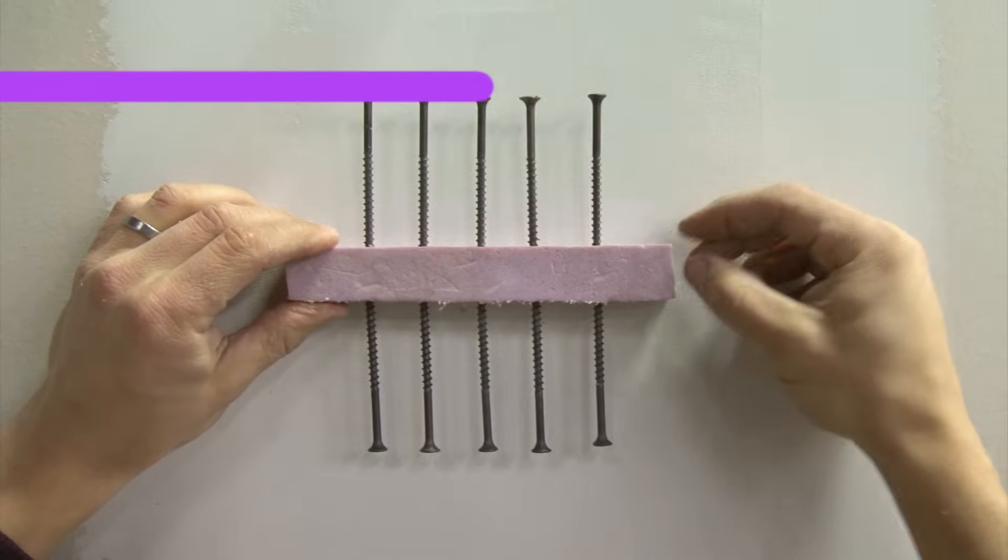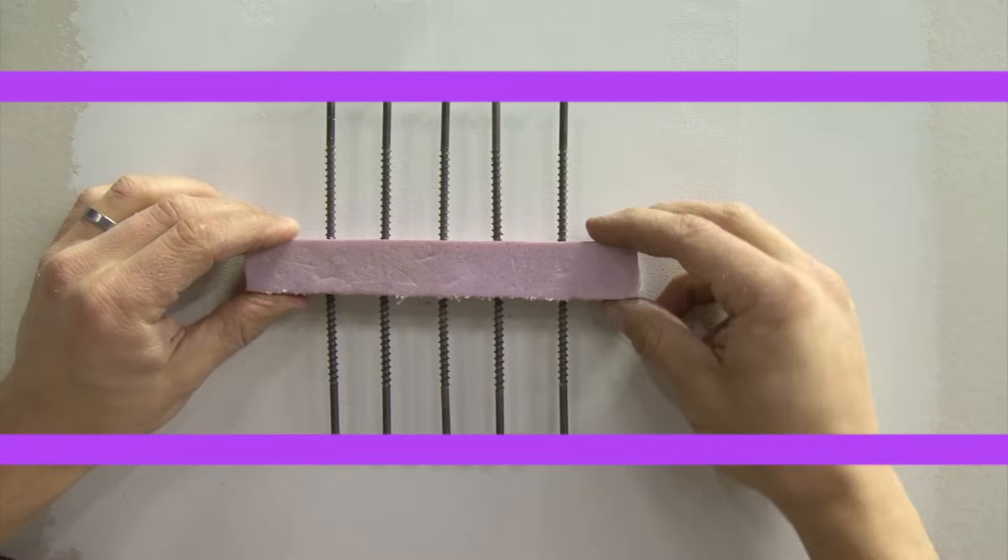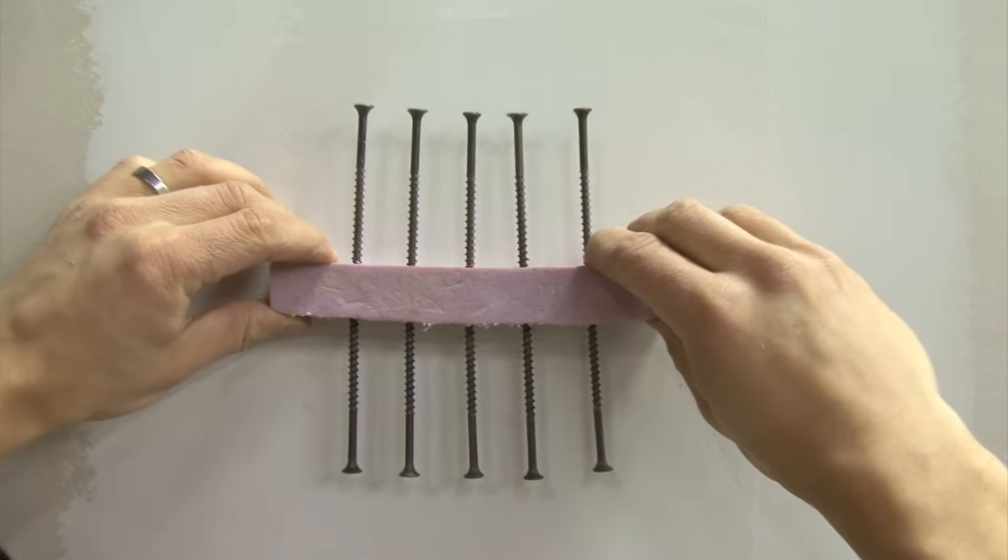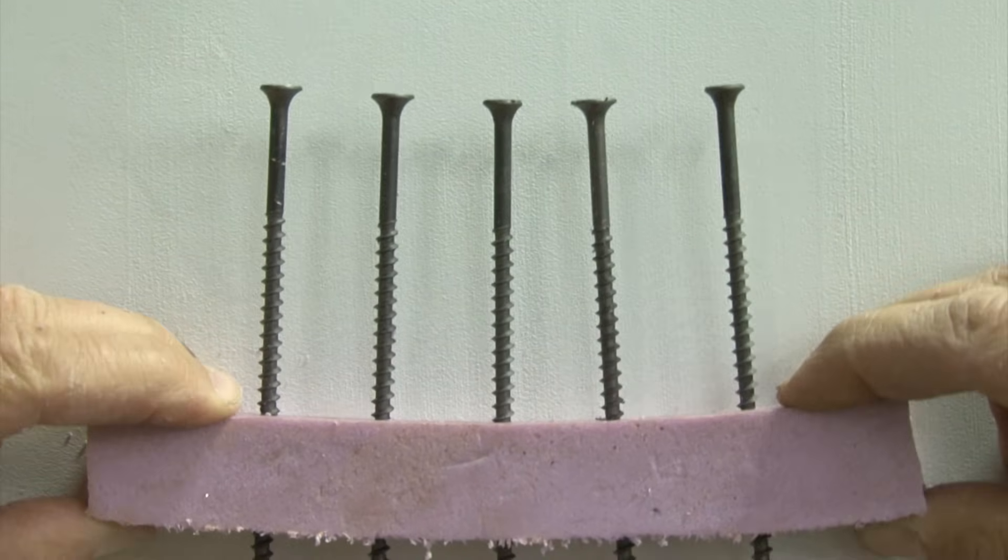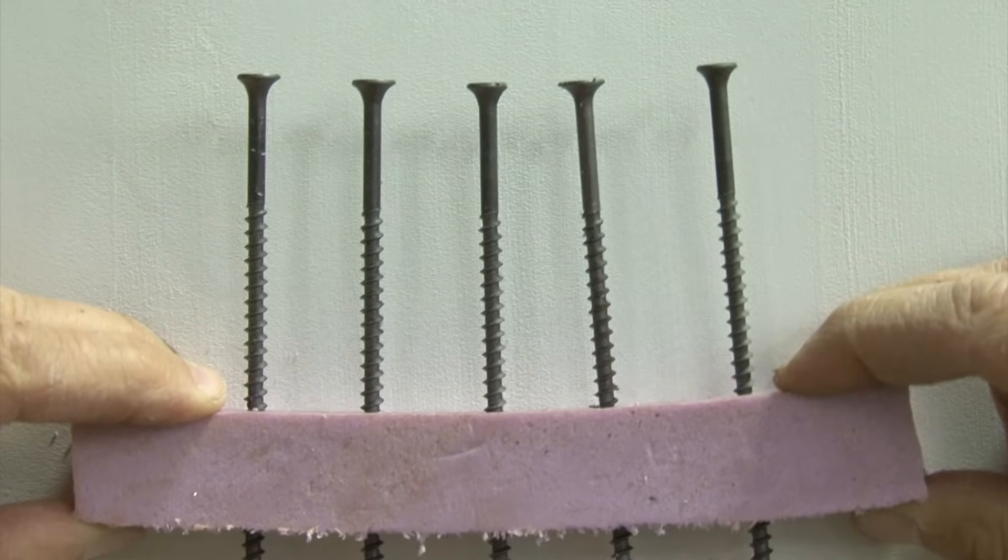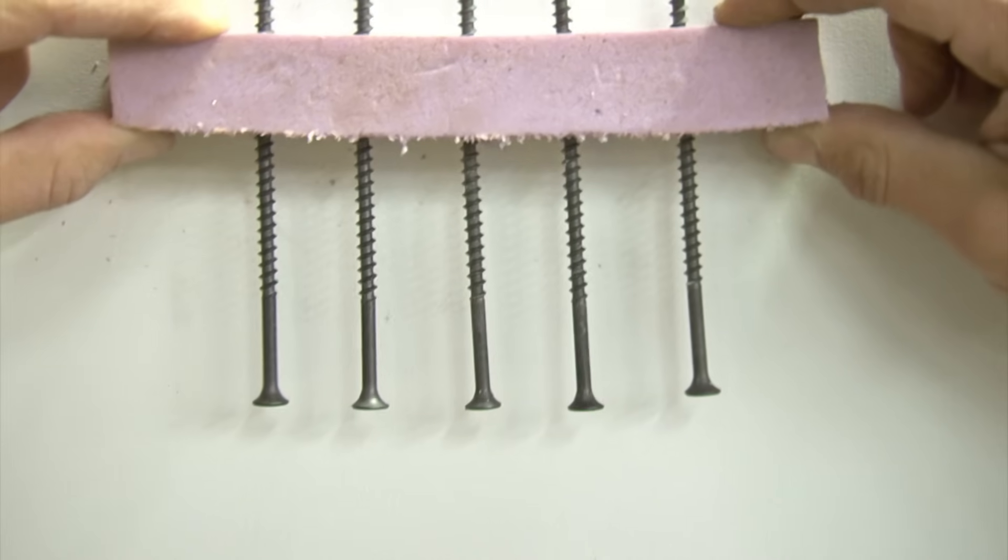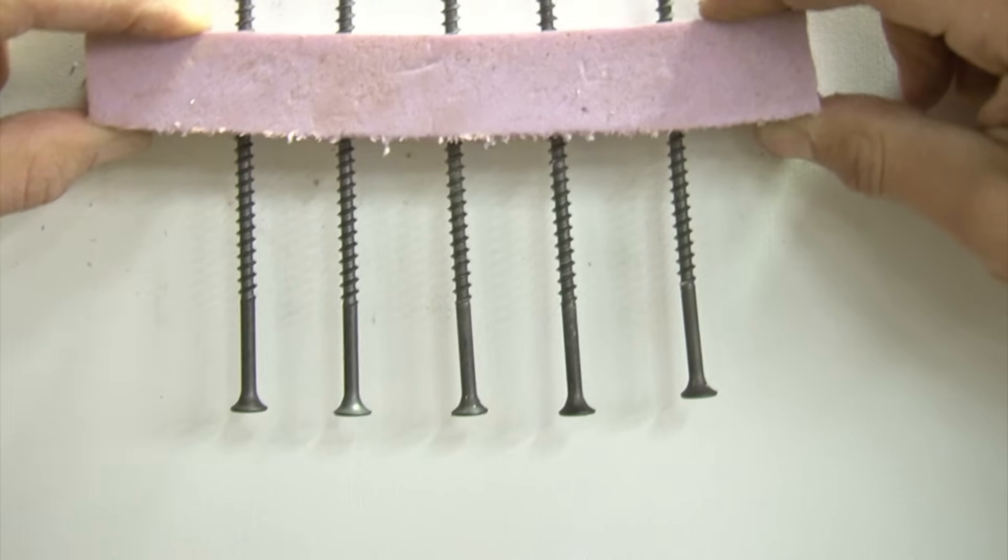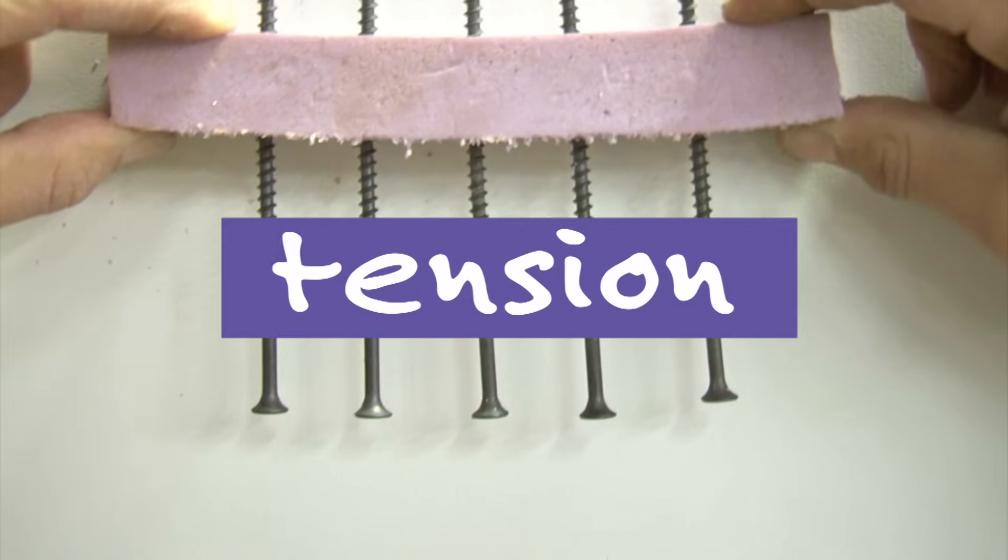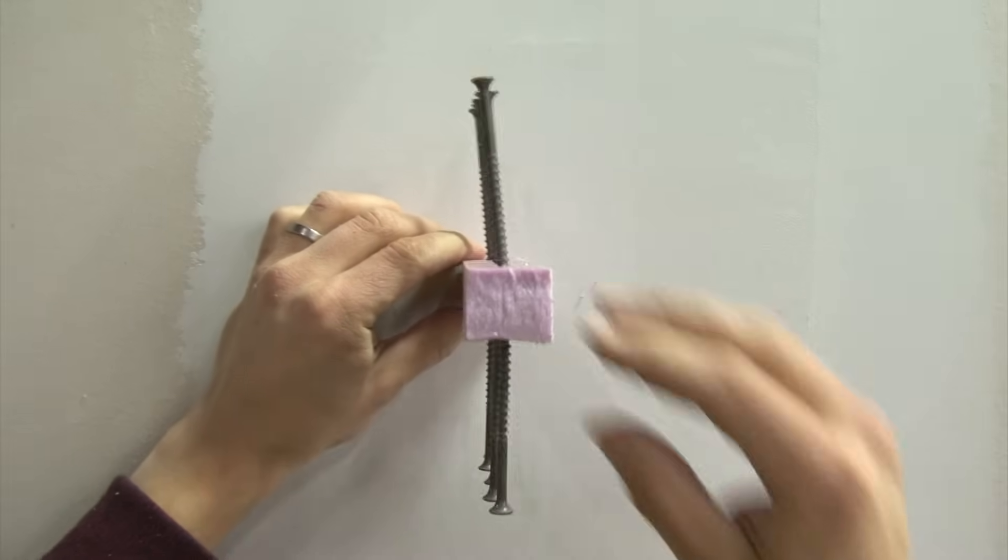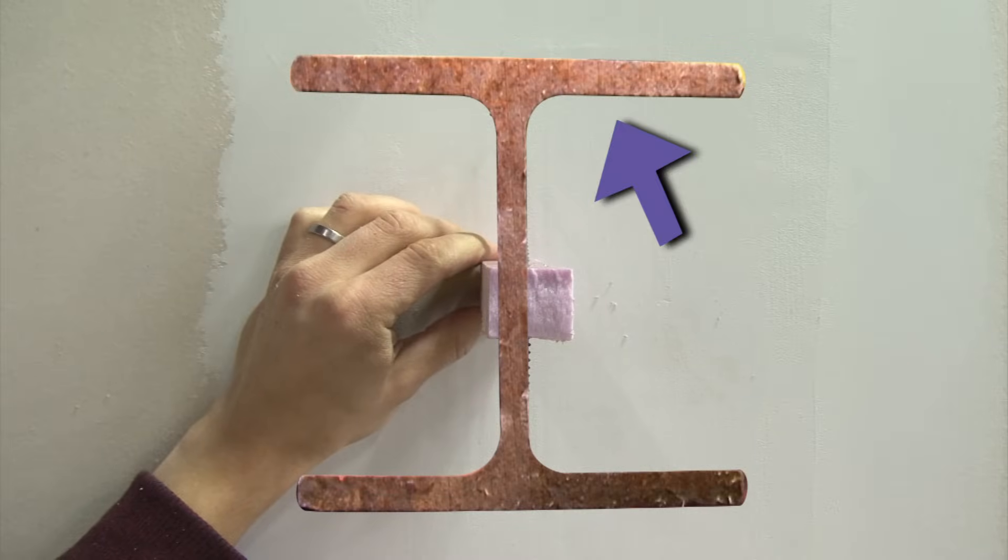Now imagine this is the top of the I-beam and this is the bottom of the I-beam. When we apply a load to the middle, it bends. And you can see the screws on the top of the beam, they get closer together. The top of the beam is in compression. Now look at the screws on the bottom end of the beam. Those screw heads get further apart. That means the bottom side of the beam is in tension. We want to put all the material where it's needed the most. At the very top and the very bottom of the beam.